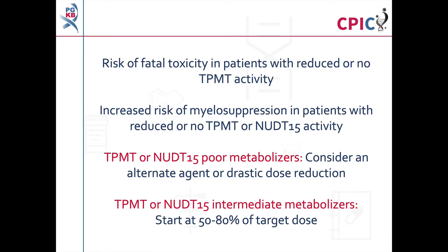Due to the risk of fatal toxicity in TPMT poor metabolizers and the increased risk of myelosuppression in TPMT or NUDT15 poor metabolizers, the guideline recommends the use of alternative therapies or a drastic dose reduction in these patients. A dose reduction is also recommended for TPMT or NUDT15 intermediate metabolizers.